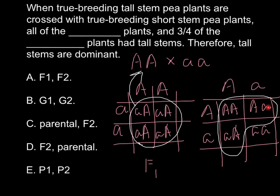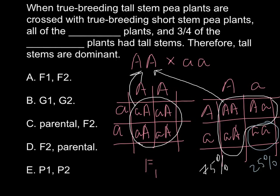Here we have one plant that is homozygous dominant, and one that is heterozygous — but as long as they have one dominant gene, phenotypically all three of those plants would look like the dominant parent. We can say 75% look like the dominant parent, and 25% — one out of four — will look like the recessive parent.